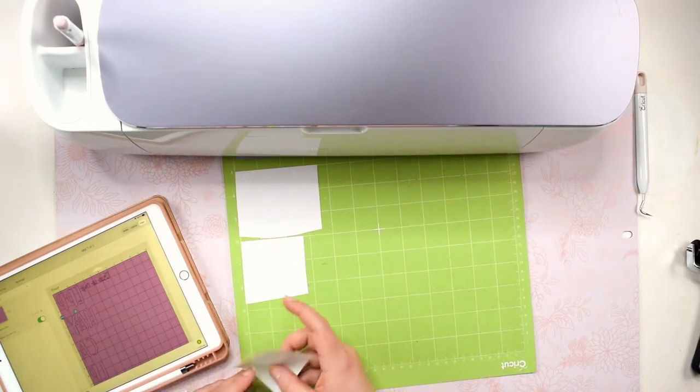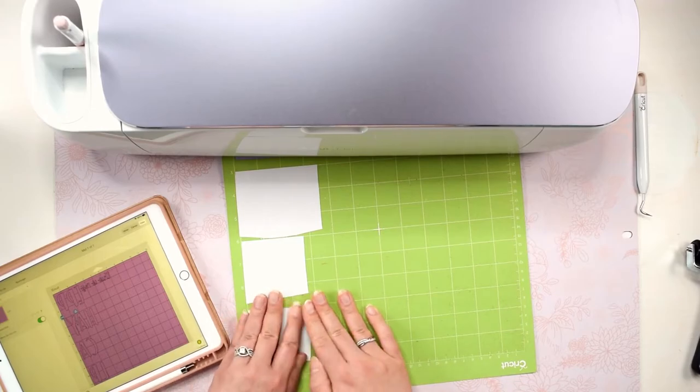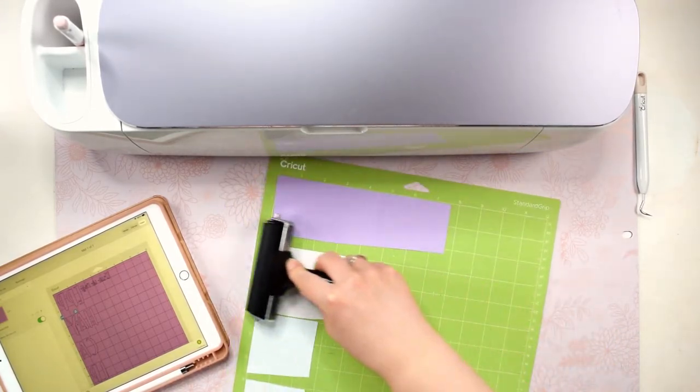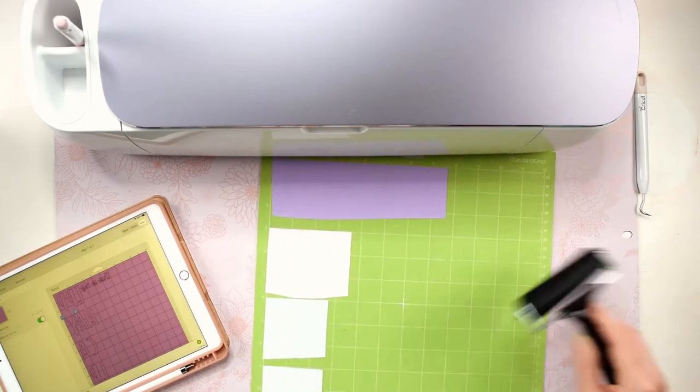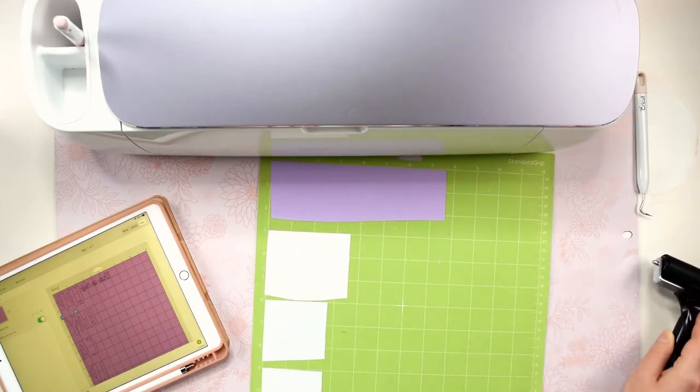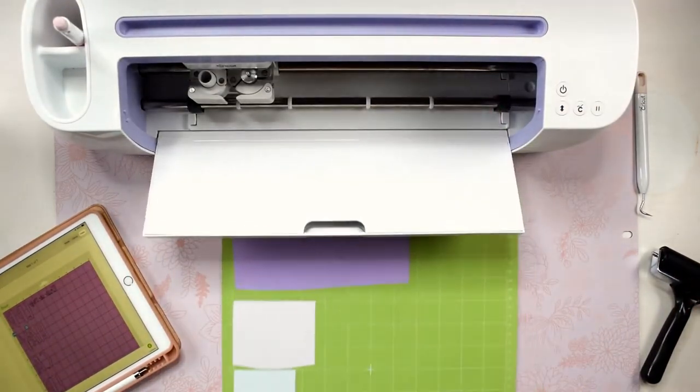Make sure that you are placing the vinyl in the same spots on the mat as we set up in Design Space. Before I make any cuts, I like to use a brayer tool to make sure that the vinyl is really stuck down on the mat. Okay now we are ready to start cutting.